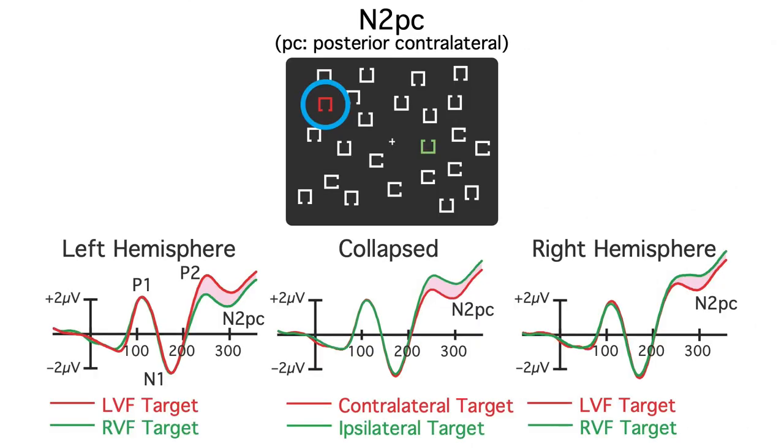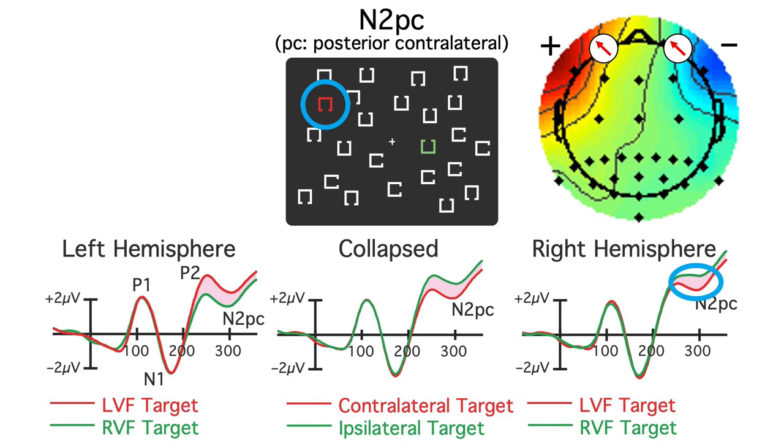Eye movements are a more difficult problem, especially in experiments with lateralized stimuli like N2PC and CDA experiments. As I described in an earlier video, lateral eye movements produce lateralized voltage fields on the scalp, with a more negative voltage contralateral to the target of the eye movement, just like an N2PC.